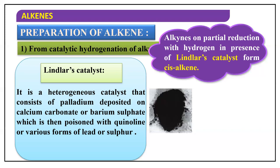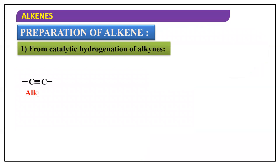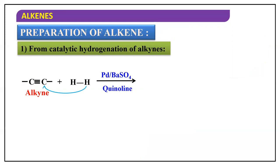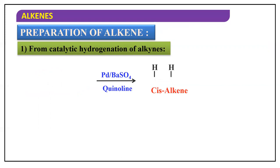With Lindlar's catalyst — palladium, barium sulfate, in the presence of quinoline — hydrogen gets added and both hydrogens get added to the carbons of the multiple bond giving us a cis alkene. It is a cis alkene because both hydrogens have added on one side of the multiple bond.